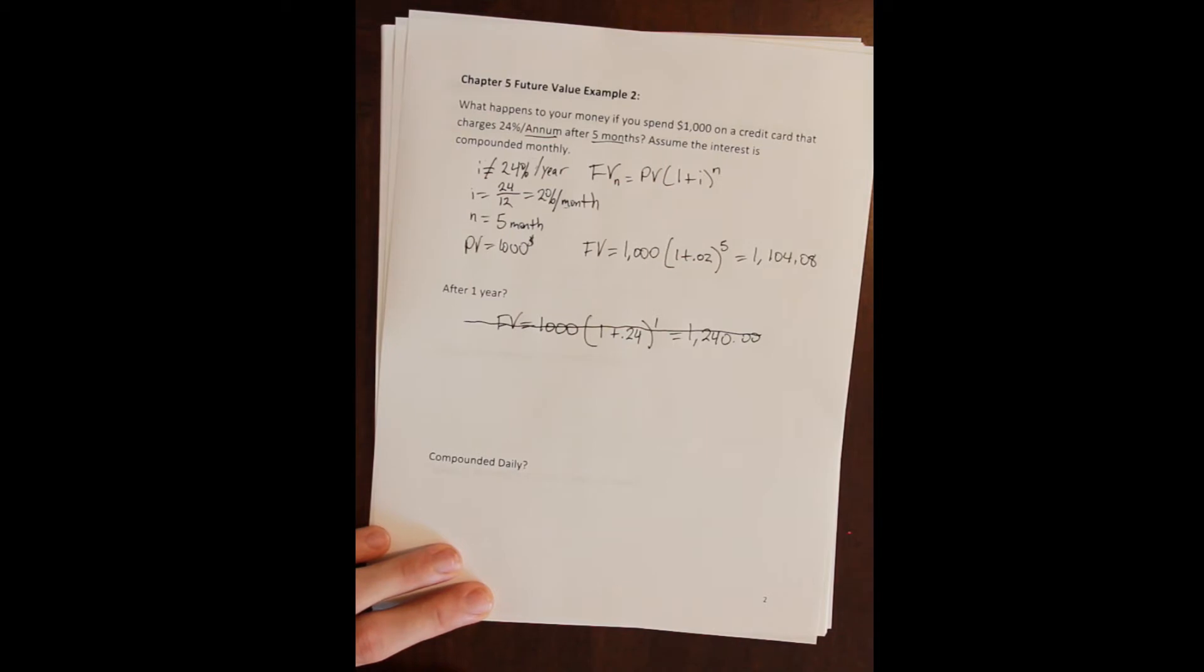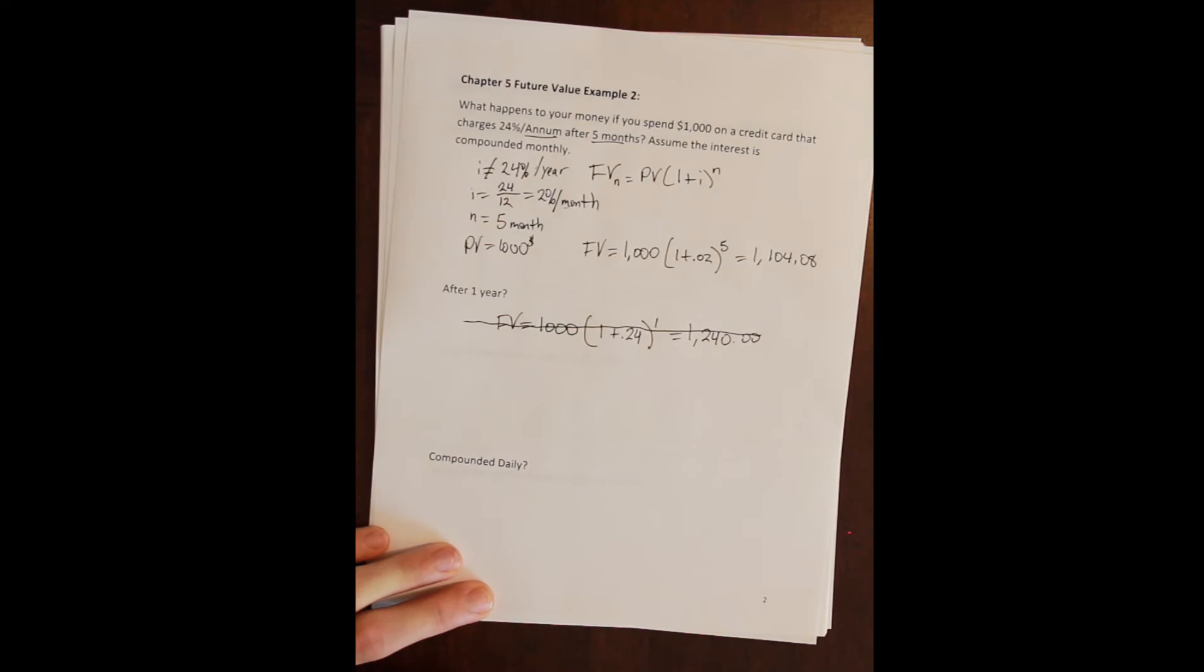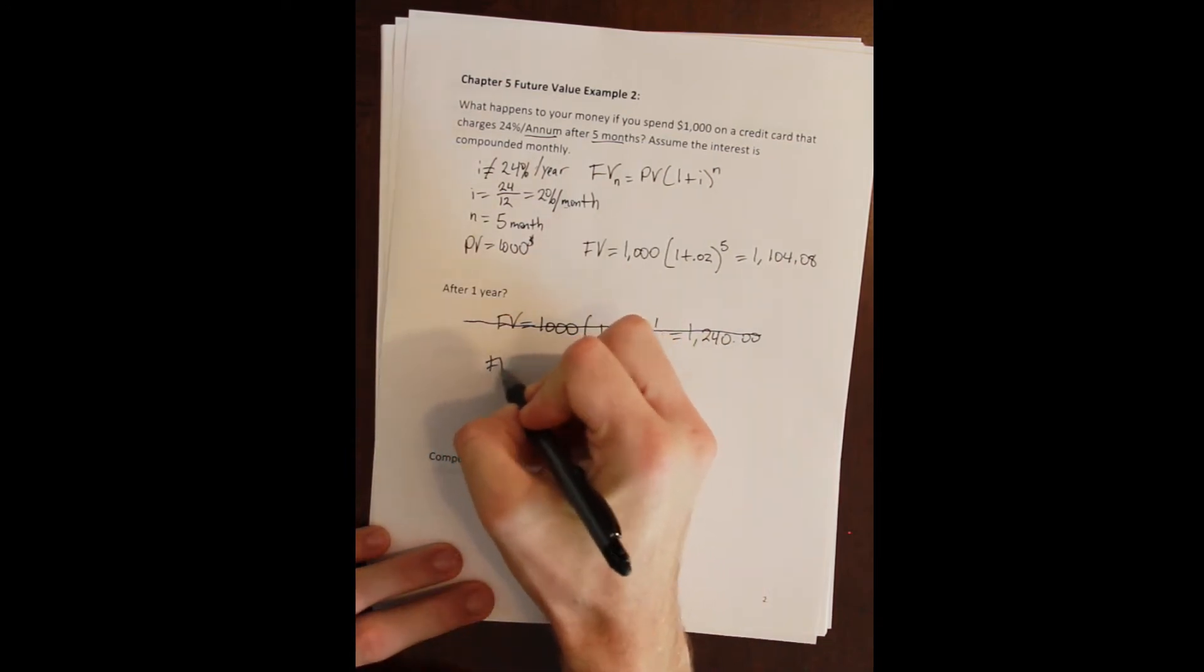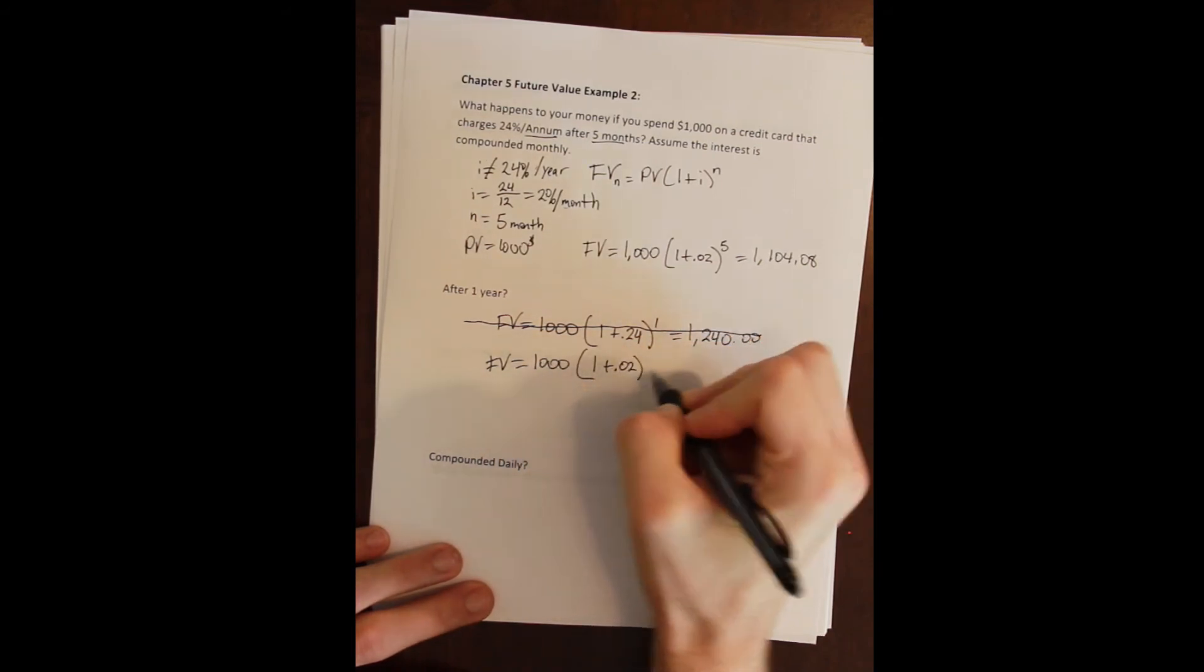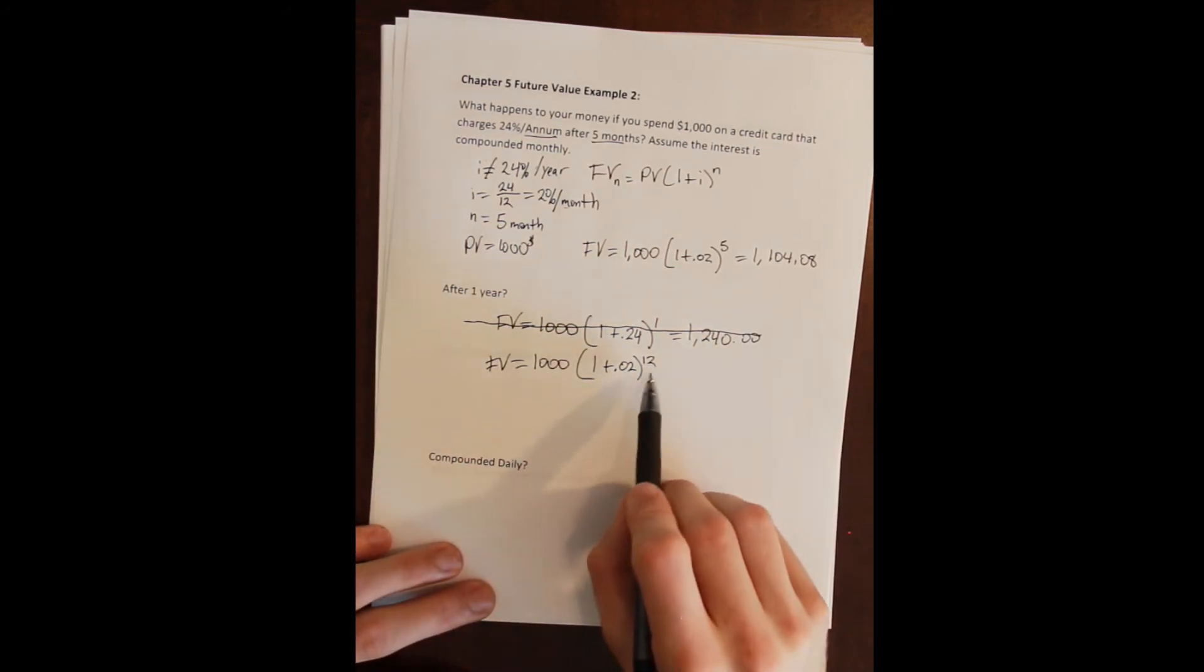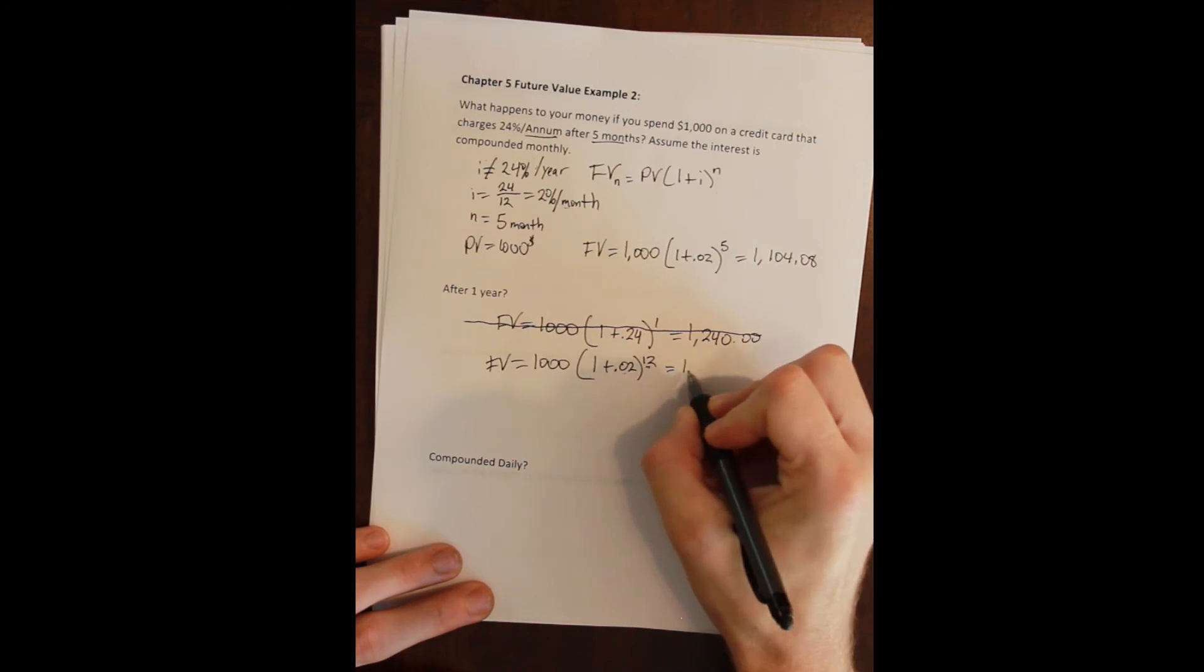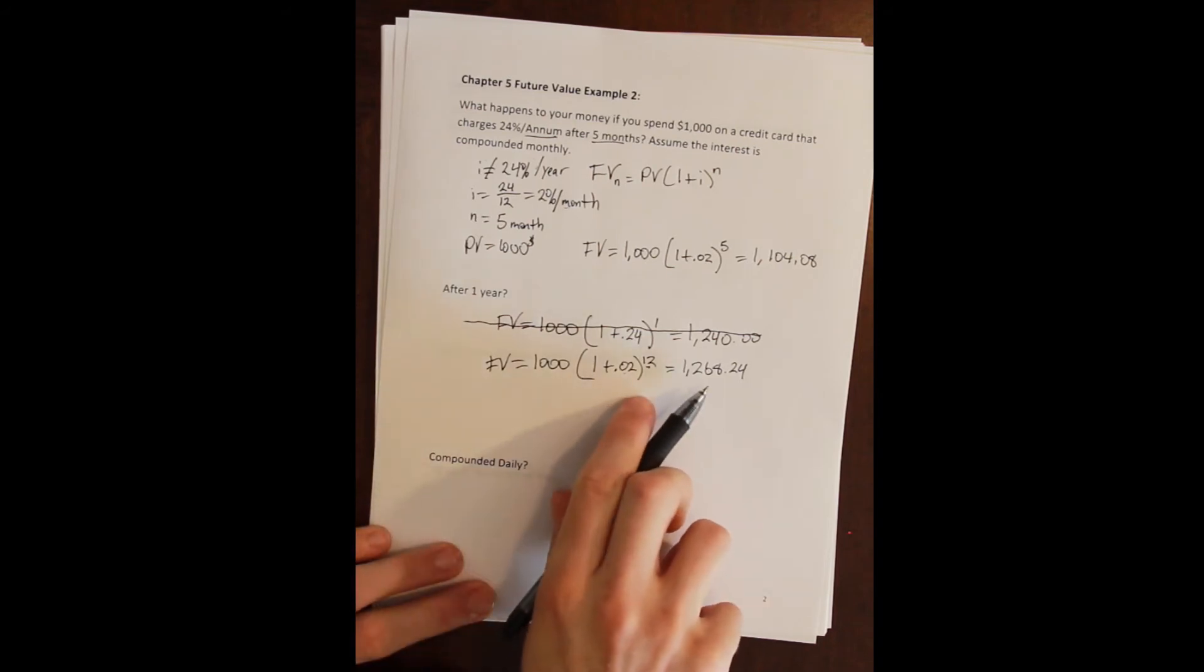Remember, the interest is compounding every month. I'm being charged 2% interest every month. And if you go back to the first problem that we worked and you look at the effect of the interest on interest, you'll see that we're ignoring a potentially big amount of money. This is how we should do it: 1 plus 2% per month for 12 months. This will capture the effect of 12, 11 months of compound interest at 2% per month, and we get 1,268.24.